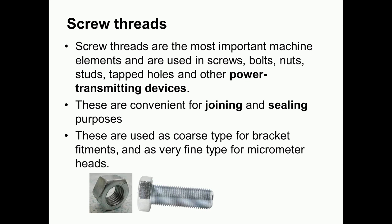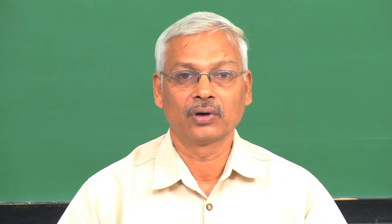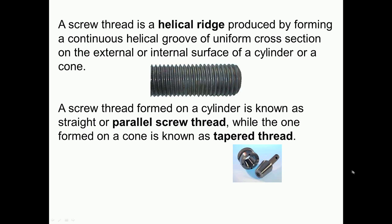Let us understand the general aspects of screw threads. These are the most important machine elements and are used in screws, bolts, nuts, tapped holes, and other power transmitting devices. They are very convenient for joining and sealing purposes, used as coarse type for bracket fitments and as very fine type for micrometer heads and precision moving mechanisms. A screw thread is basically a helical ridge produced by forming a continuous helical groove of uniform cross section on an external surface of a cylinder or a cone.